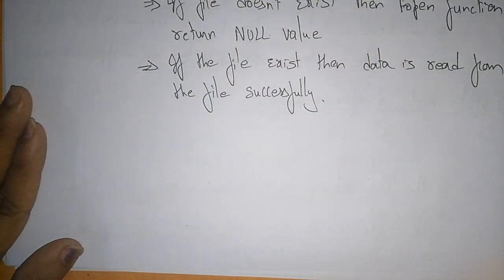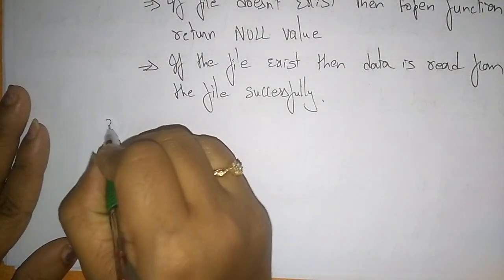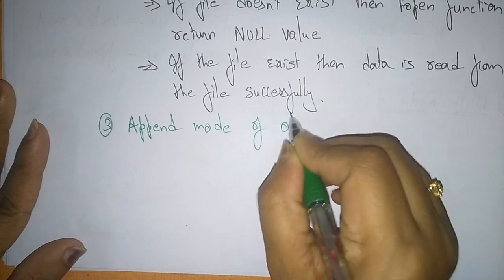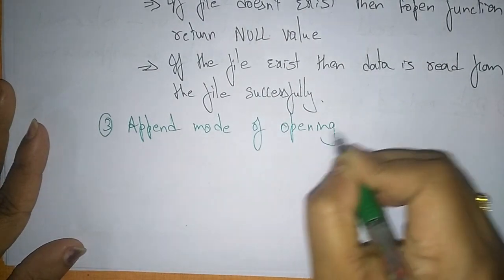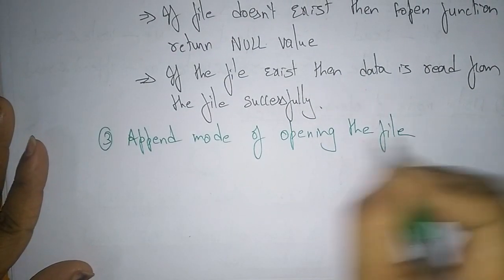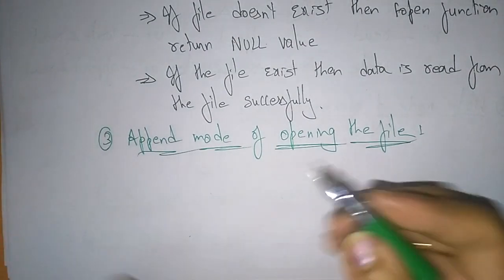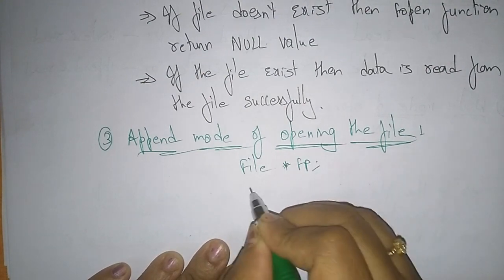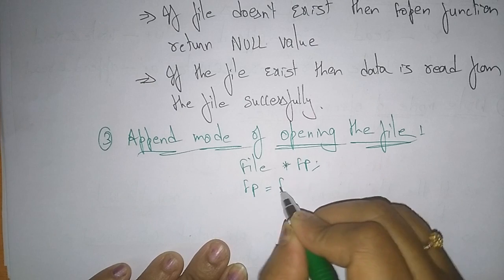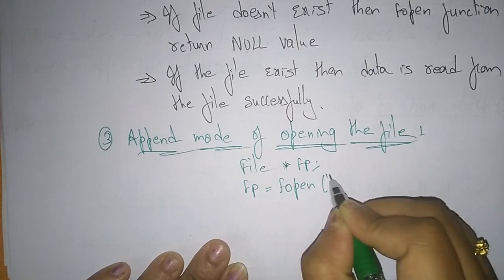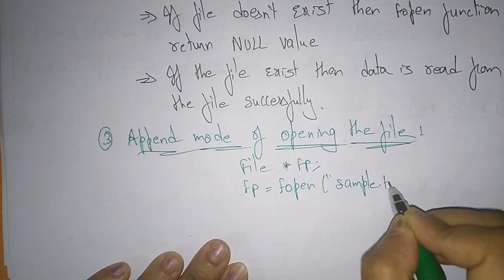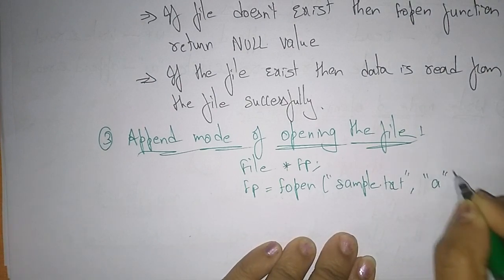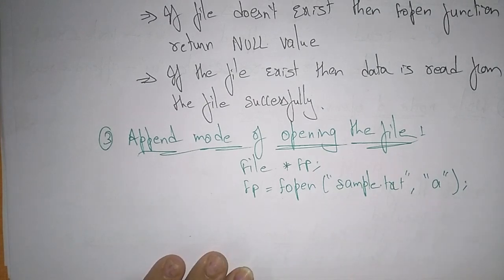Now the third file operation is the append mode of opening the file. The same steps apply: first declare the file pointer fp, then fp = fopen("sample.txt", "a") — whether the file is present or not, you want to open it and the mode should be append. So what does it do?